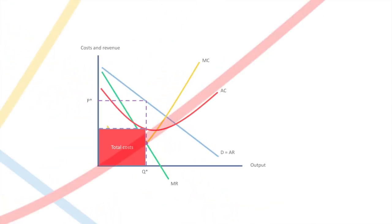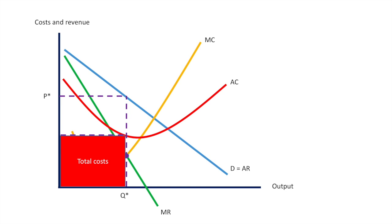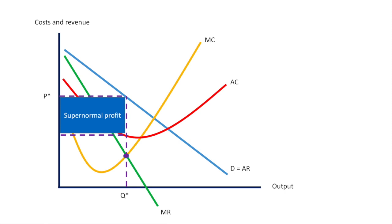Total costs are bordered on the right by Q* and above by the cost per unit. Our total revenue is greater than our total cost, which leads us to our supernormal profit. This blue region represents the supernormal profit earned by the monopolist in both the short run and long run. The key thing to remember is that the high barriers to entry and market power of the monopolist prevent new firms from entering the market and eroding these supernormal profits.